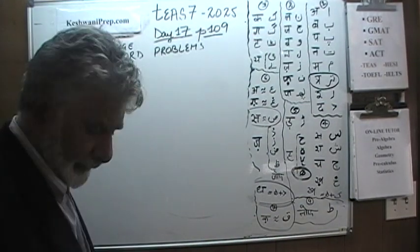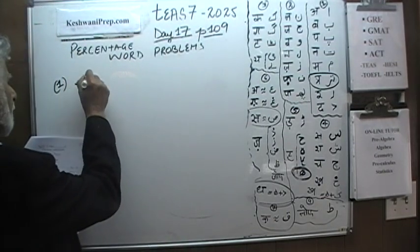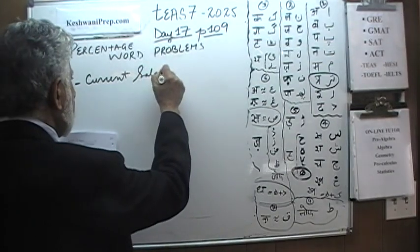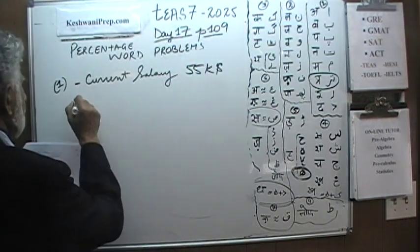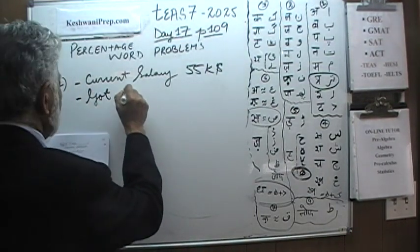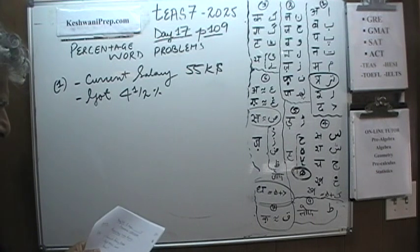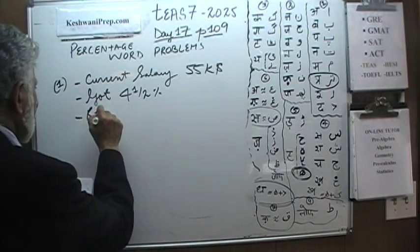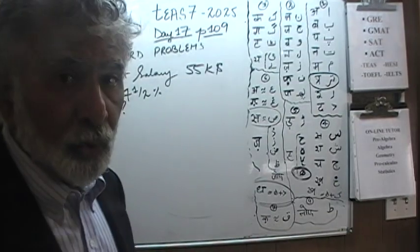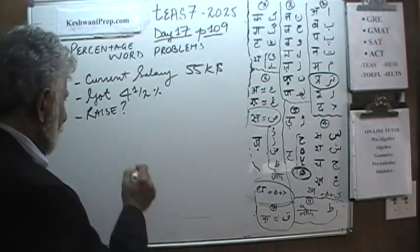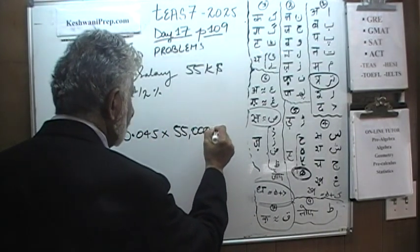Here is number one. In number one we are told that our current salary is $55,000. We are further told that we just got a raise of 4.5%. The question simply is, how much was our raise? Now, 4.5%, if you wanted to, you can figure out what 4.5% is in decimal, which would turn out to be 0.045 and multiply that by 55,000.